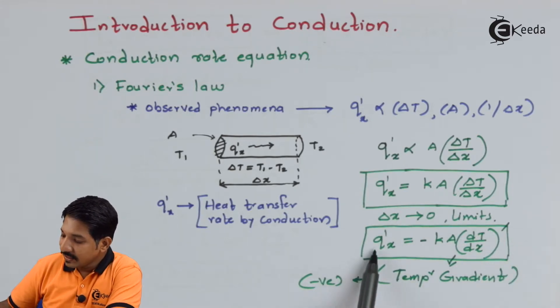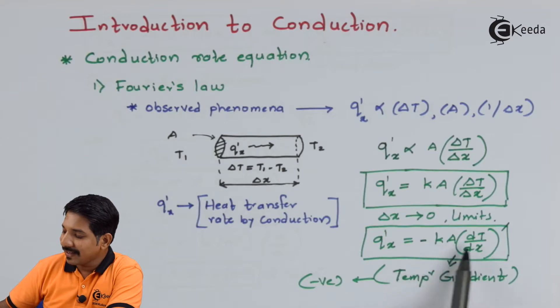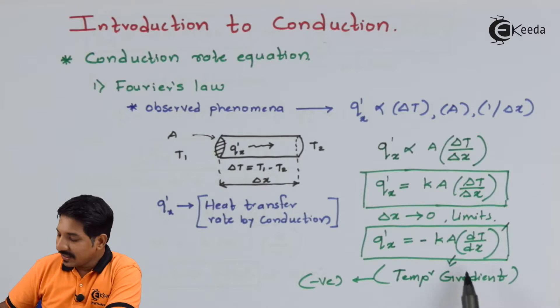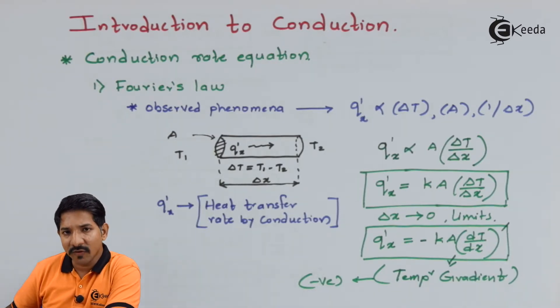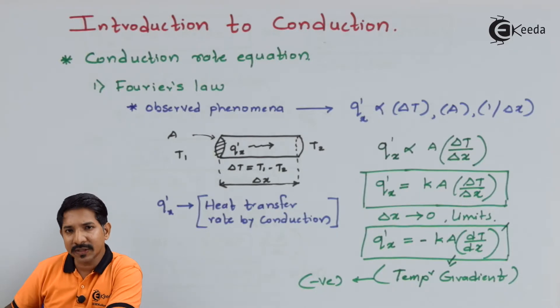So finally we get to the Fourier's equation which is Q'x equal to minus KA dT by dx where dT by dx is the temperature gradient. Now this temperature gradient is inherently negative because heat flow always takes place from higher temperature to lower temperature.